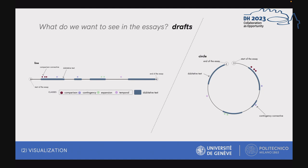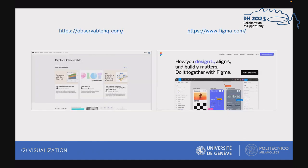At first I didn't know if I wanted to represent the essay as a line on which to place the data, but then, because of space issues in the layout, I decided to rotate the line around itself, shaping a circle. The idea was to represent the text with a circular line, thicken the line at the dubitative parts, and place connectives in the outer perimeter in the form of colored dots according to the four classes. The visualization was carried out on the Observable platform, and then reworked with the Figma tool.